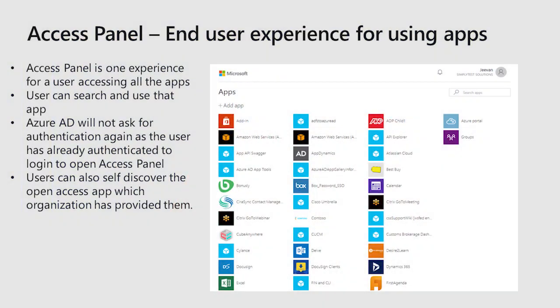Now we will see how the end users are going to use these applications. Our recommended way is using Access Panel. Access Panel is a one experience for the user where they can find all their apps and invoke the single sign-on for any app they want, whether it will be a line of business application or a SaaS application. We have provided a search ability where they can search the application and use that if the list is very big. Azure AD will not ask for authentication again for any app because users have already authenticated to log into the Access Panel. Users also can self-discover the apps by clicking on the Add App button, which provides discoverability of the apps which the organization has provided them so that they can request access and use those apps.